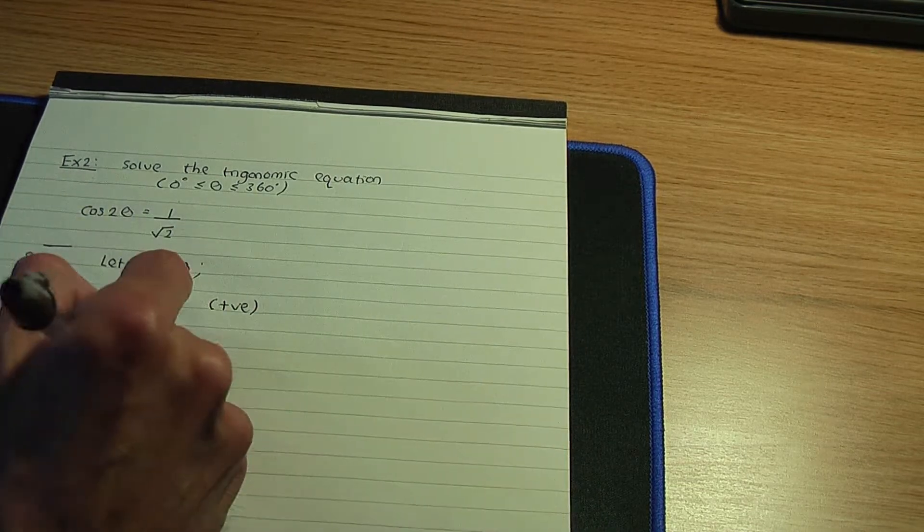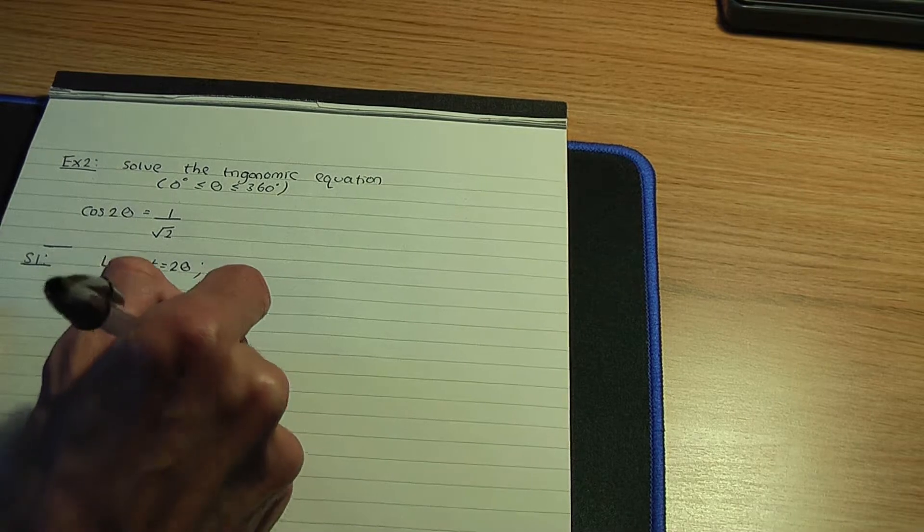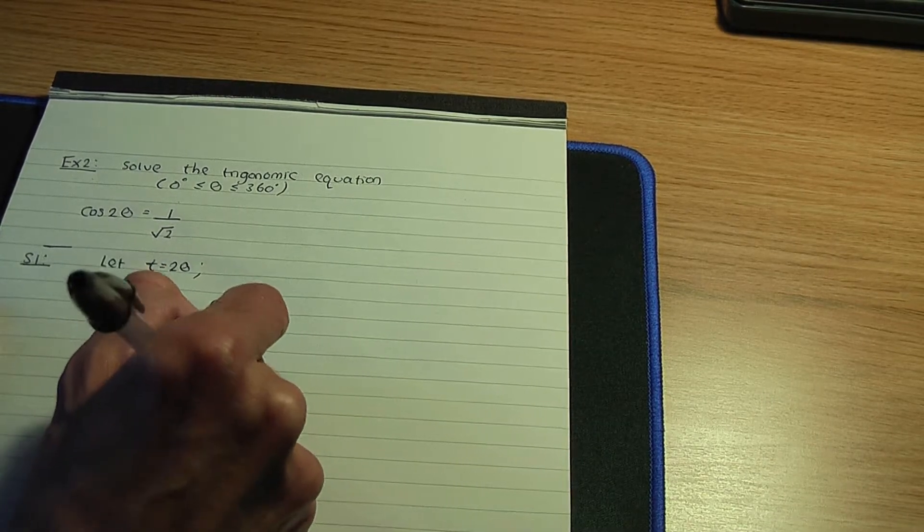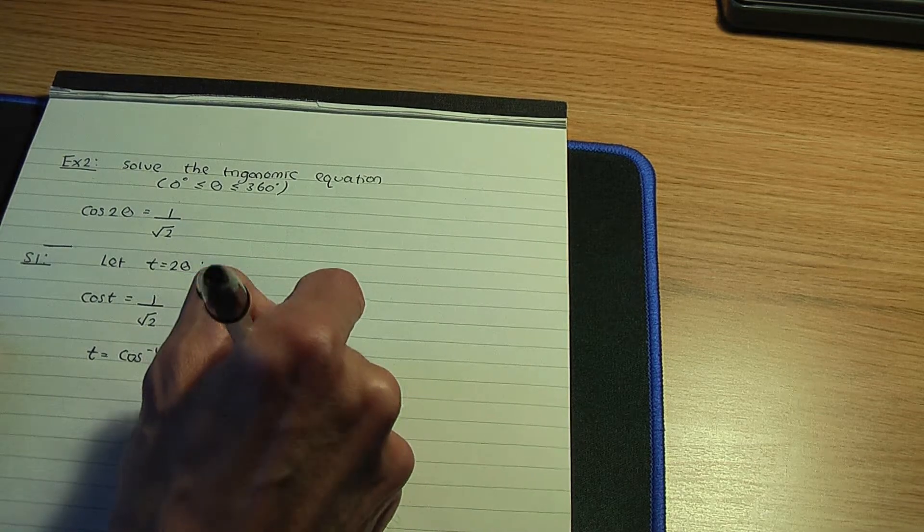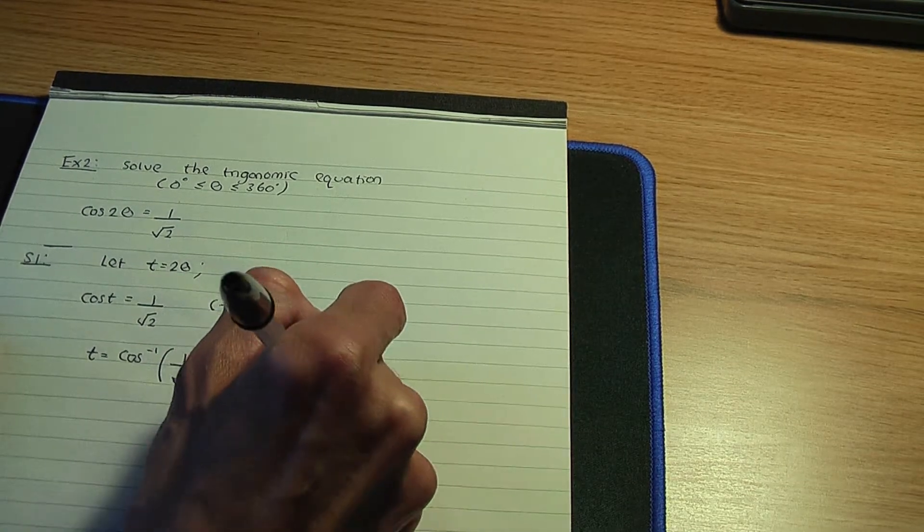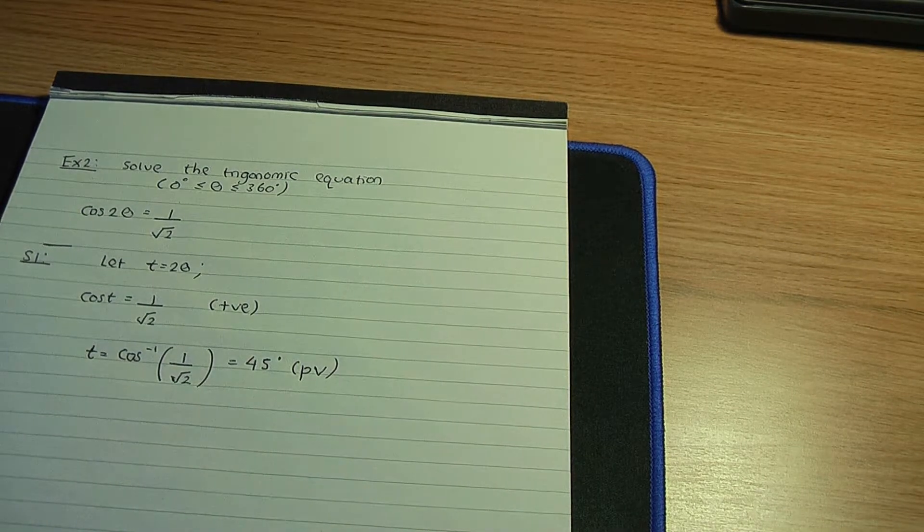When it comes to calculating the principal value, it will be the inverse cos of 1/√2, and that is a standard result that should give you 45 degrees. So that is your principal value.